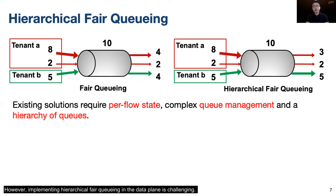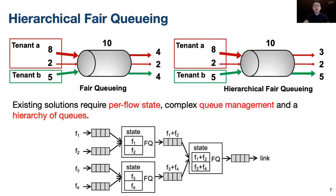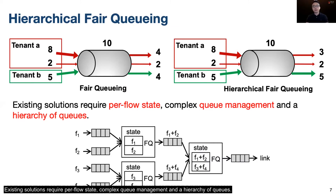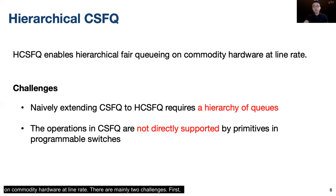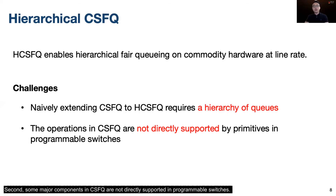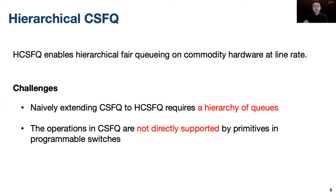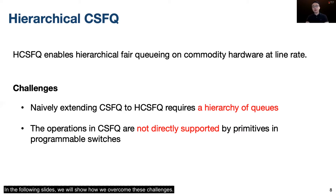However, implementing hierarchical fair queuing in the data plane is challenging. Existing solutions require per-flow state, complex queue management, and hierarchical queues. In our work, we present HCSFQ, which enables hierarchical fair queuing on commodity hardware at line rate. There are mainly two challenges. First, naively extending CSFQ to a hierarchical version may also require a hierarchy of queues. Second, some major components in CSFQ are not directly supported in programmable switches. In the following slides, we will show how we overcome these challenges.